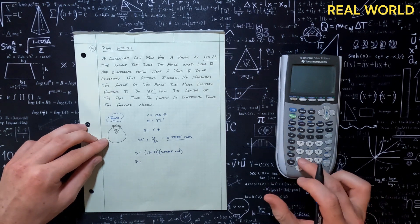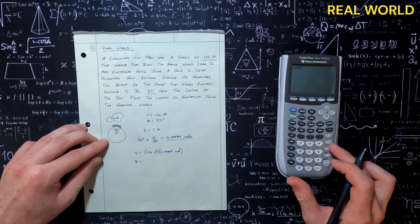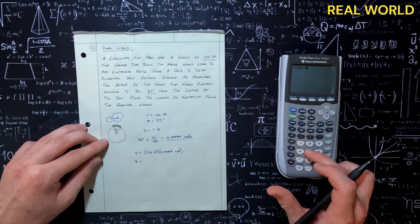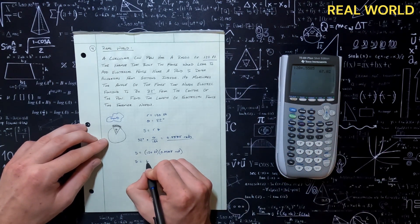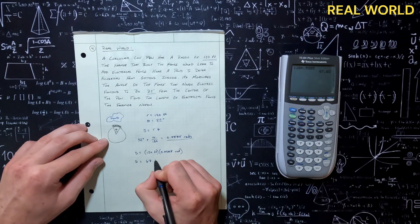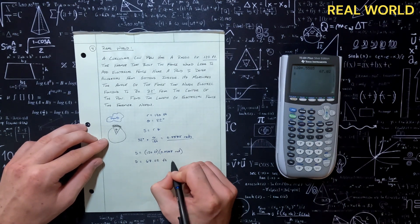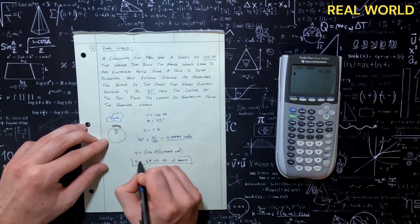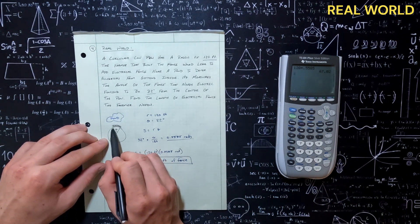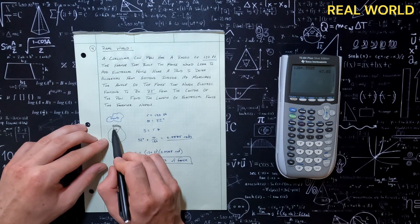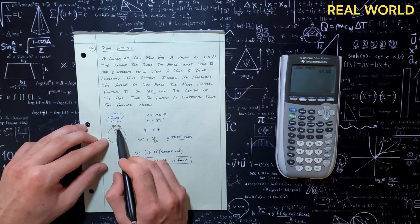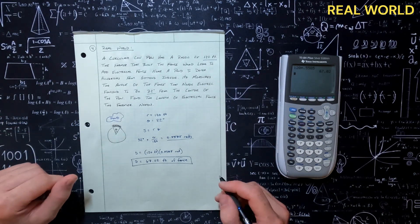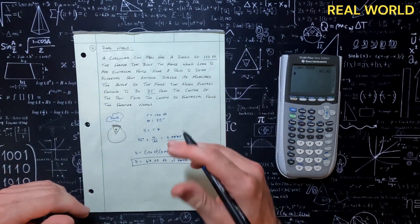We come over here in our calculator and type in 120 times 0.5585. We get 67.02 feet of fence. So we just found the arc length — the total fencing the farmer would want to keep the alligators out of the pond.